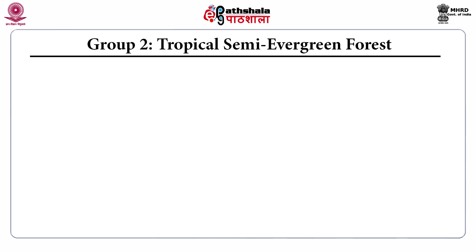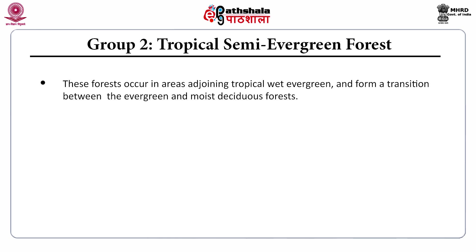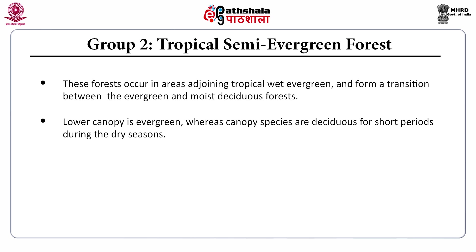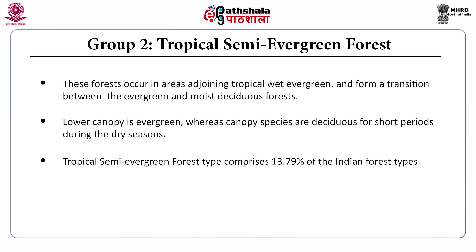Group 2, the tropical semi-evergreen forests, occur in areas adjoining the tropical wet evergreen forests, forming a transition between the evergreen and moist deciduous forests. The lower canopy is evergreen, whereas the canopy species are deciduous for short periods during the dry season. The tropical semi-evergreen forest type comprises 13.79% of Indian forest types.